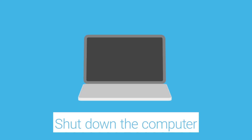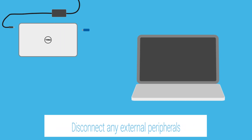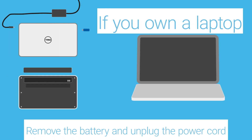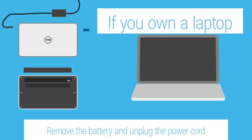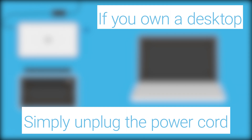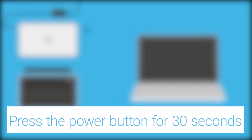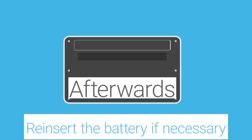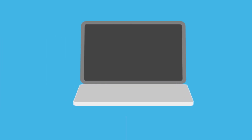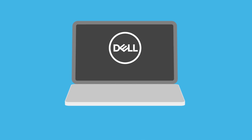Perform a hard reset on your PC. Shut down the computer and disconnect any peripherals connected to the system. If you own a laptop, remove the battery and unplug the power cord. If you own a desktop, you only need to unplug the power cord. Press the power button for 30 seconds to drain any residual power. With that done, reinsert the battery for the laptop if necessary. Next, turn on your computer and test the keyboard to see if it responds properly. If this didn't work, go on to the next step.